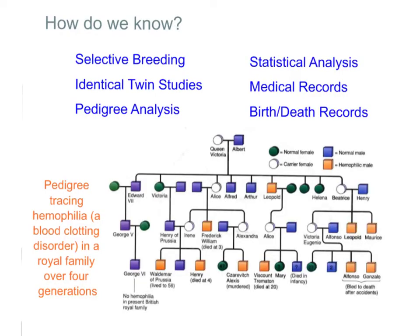So how do we know if something is inherited genetically or not? There are a lot of different ways that scientists look at this. There's selective breeding with dogs or other organisms to see if certain traits are passed on. Identical twin studies also help — statistical analyses can be done on different populations to see if traits are being passed on or not.